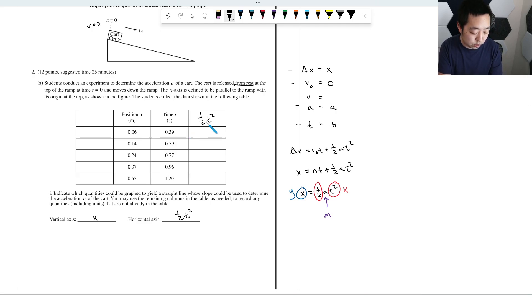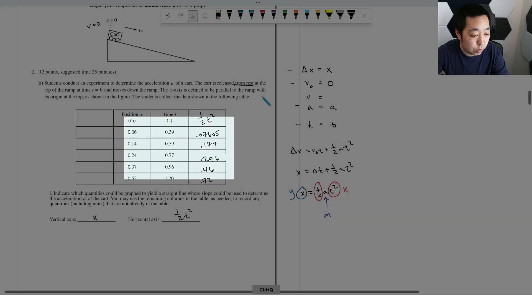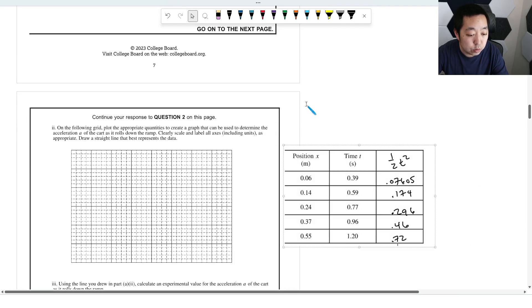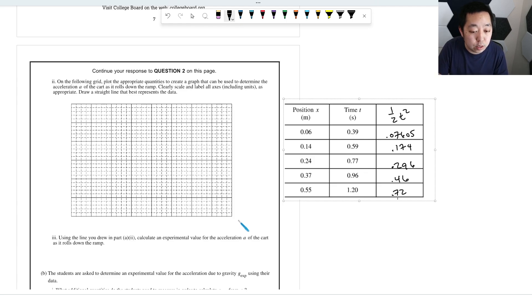So let's first I have to compute one half t squared for all of these real quick. So 0.5 times 0.39 squared is 0.07605. 0.5 times 0.59 squared is 0.174. 0.5 times 0.77 squared is 0.296. 0.5 times 0.96 squared is 0.46. And then 0.5 times 1.2 squared is going to be 0.72.